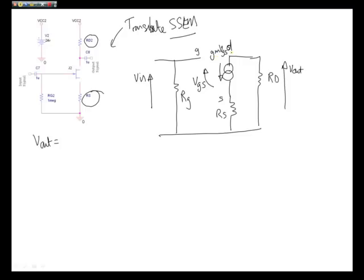V out is going to be a function of GMVGS here, this current source feeding through this loop. So in effect, our current source is quite straightforward to calculate. We have our resistance RD multiplied by GMVGS, and that's this loop around here.